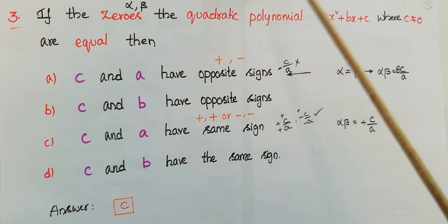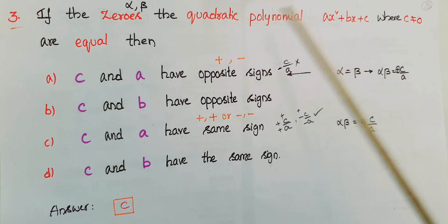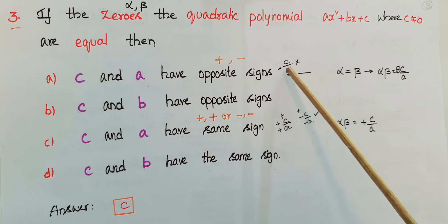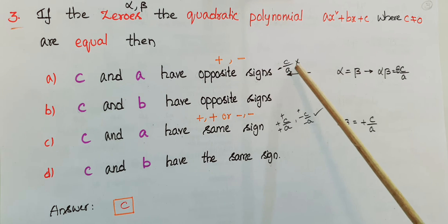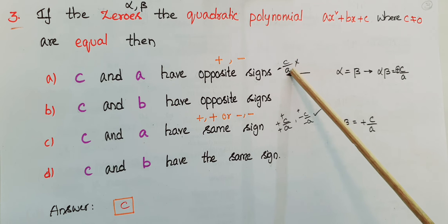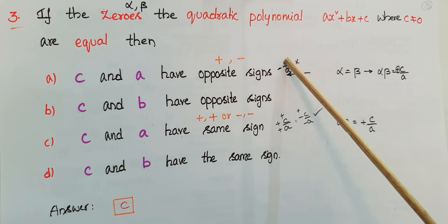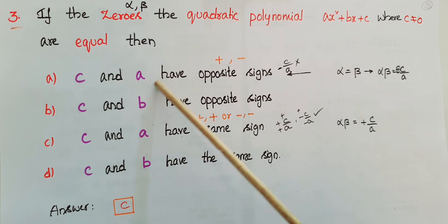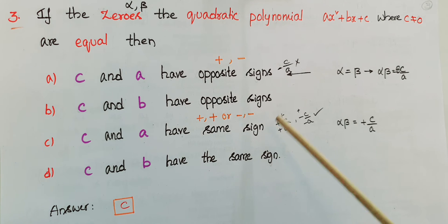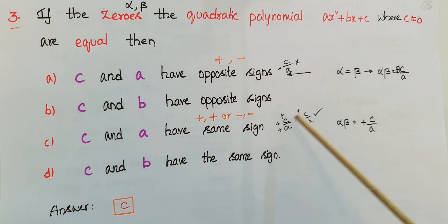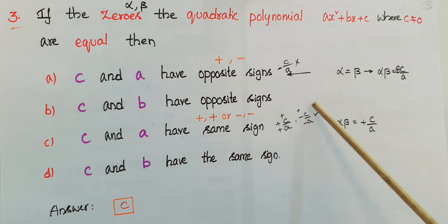Third question: if the zeros of the quadratic polynomial x² + bx + c, where c ≠ 0, are equal, then — options are given. The product of zeros alpha·beta equals c/a. If c and a have opposite signs, then c/a is negative, but alpha·beta must be positive, so that option is wrong. If c and a have the same sign — both positive or both negative — then c/a is positive. So option C, 'c and a have the same sign,' is correct. The answer is C.